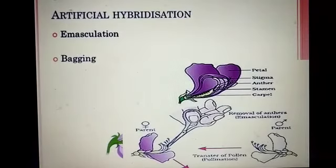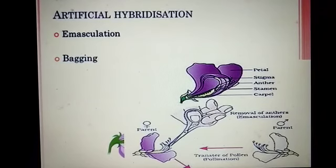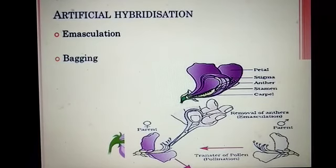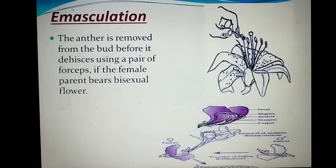The next topic is artificial hybridization. It is a man-made method and is very important. Sometimes questions are asked about emasculation and bagging. Artificial hybridization has been used by plant breeders for crop improvement.